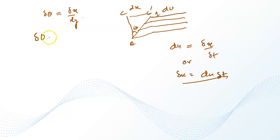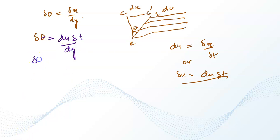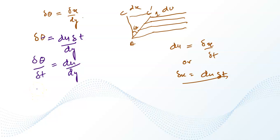Substituting, delta theta equals du times delta t divided by dy. Transferring delta t to the left side, delta theta divided by delta t equals du divided by dy. Delta theta divided by delta time is simply the shear rate, represented by the symbol gamma-dot, so shear rate equals du divided by dy.